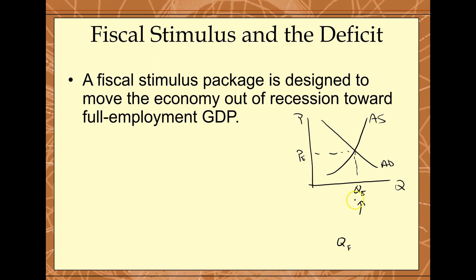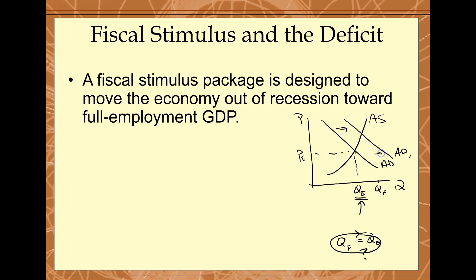The question is: is Q sub E equal to Q sub F? What if Q sub F is really over here? That means the level of output being produced is less than the full employment level of output. What we want to do is get the two equal, and one way to do it is to shift the demand curve to the right. If we do that, we see a new equilibrium level of output equal to Q sub F. So we could use fiscal stimulus to shift the aggregate demand curve to the right, so we can get Q sub E equal to Q sub F.